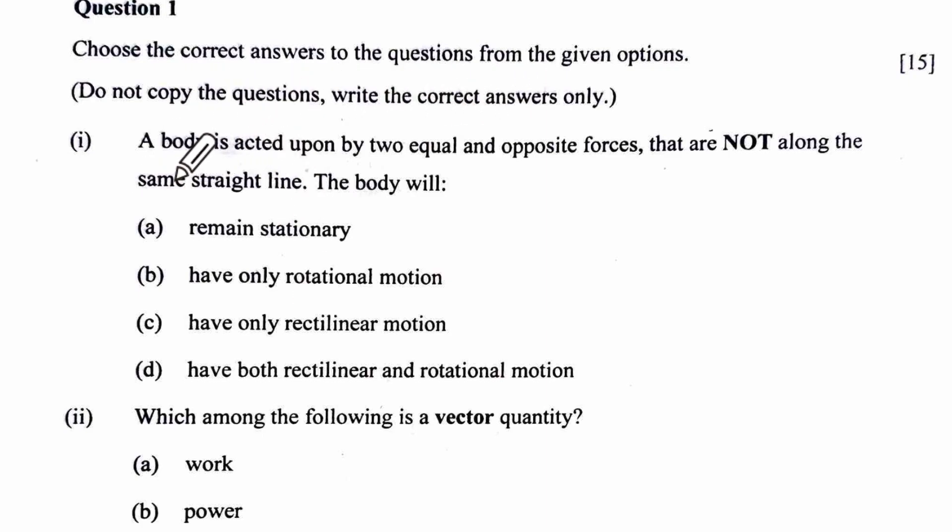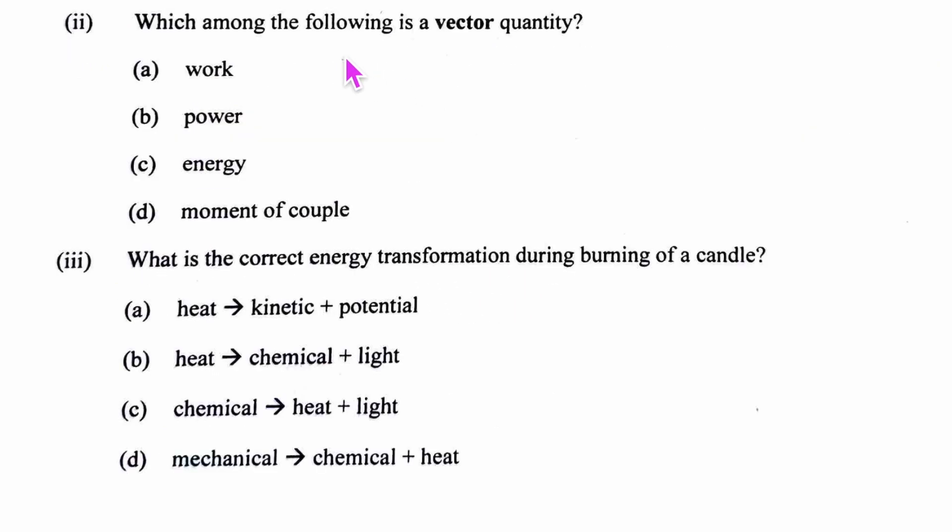A body is acted upon by two equal and opposite forces that are not along the straight line. The body is going to rotate because it forms a couple, so it will have only rotational motion. The correct option is B. Which among the following is a vector quantity? This has direction, so it is D.